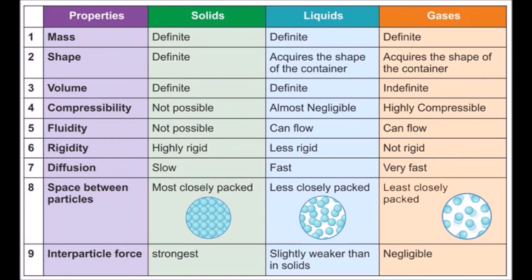Let us compare the properties of solid, liquid, and gases. Number 1 — Mass: All three have definite mass. Number 2 — Shape: Solids have a definite shape because their molecules are closely packed. Liquids acquire the shape of their container because molecules are less closely packed. Gases also acquire the shape of their container because molecules are very loosely packed and intramolecular forces are nearly negligible.